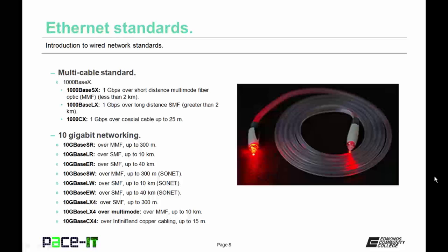Then there's 10GBaseLW, which runs over SMF up to 10 kilometers, also used in a wide area network. And then there's 10GBaseEW, which runs over single-mode fiber for up to 40 kilometers, again on that SONET-type WAN network.